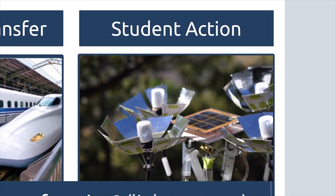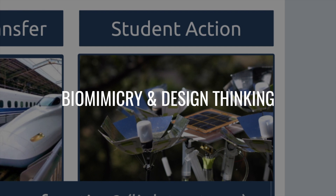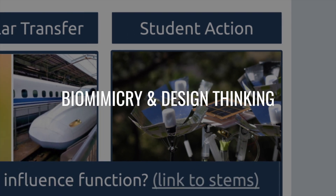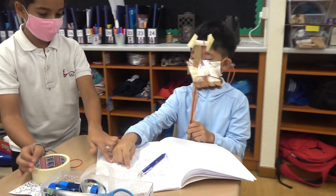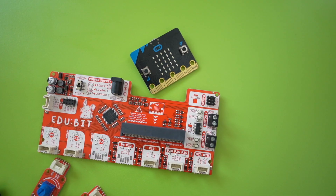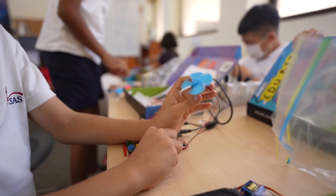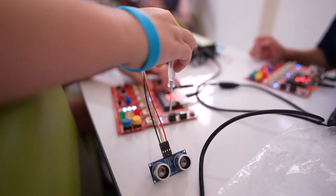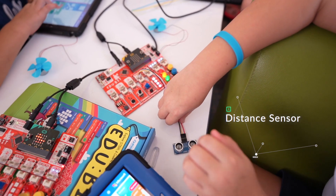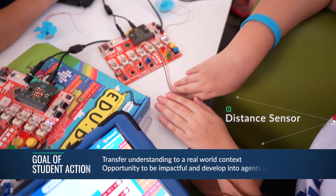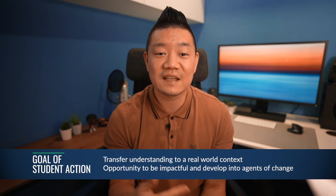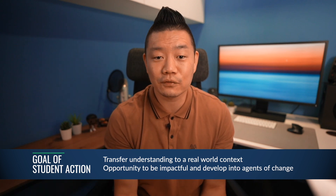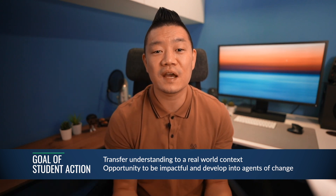Finally, for student action, students have to solve a problem through the use of biomimicry and design thinking principles and practices. They need to mimic an animal or plant's external or internal part and engineer a prototype that will help solve a problem. Students also have the potential to mimic an animal's senses and information processing through the use of electric sensors. The goal of this part of the storyboard is to have students transfer their understanding to a real-world context, giving them the opportunity to be impactful and develop into agents of change.